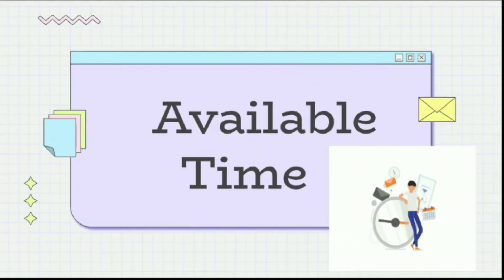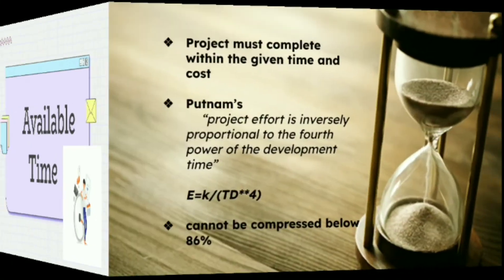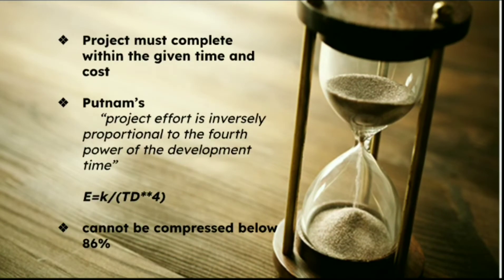Available Time: Total project effort is sensitive to the time available for project completion. Software projects require more total effort if development time is compressed or expanded from the optimal time. The development schedule cannot be compressed below 75% of the normal schedule regardless of the number of people or resources utilized. Putnam states that project effort is inversely proportional to the fourth power of the development time.